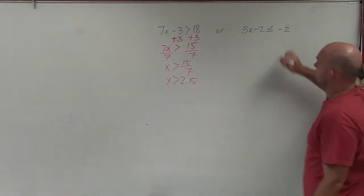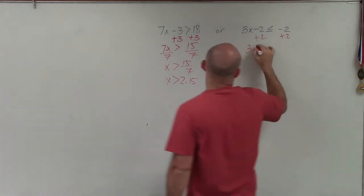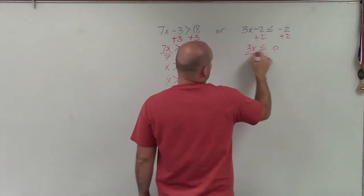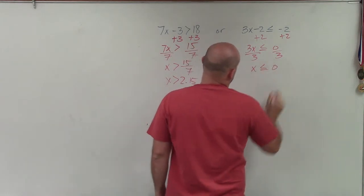Now I'll go and solve this one. So again, I'm going to use my inverse operation. So I'll add 2, add 2. And I have 3x is less than or equal to 0. Divide by 3, divide by 3. X is less than or equal to 0.